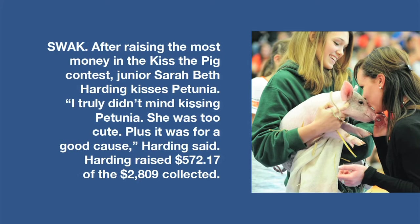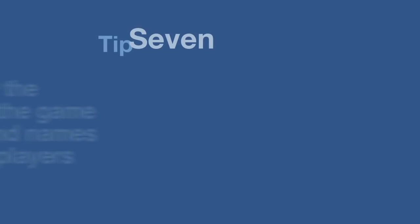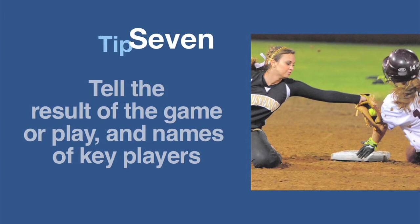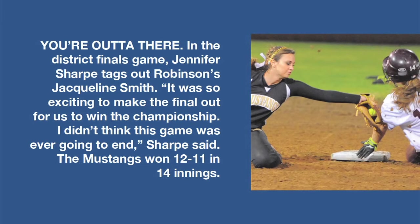Tip seven: in sports, tell the result of the game or play, as well as names of key opposing players. Nothing completes a sports caption better than giving details. The reader can't tell that this is a picture of a play that gave them the championship. 'You're out of there. In the district finals game, Jennifer Sharp tags out Robinson's Jacqueline Smith. It was so exciting to make the final out for us to win the championship. I didn't think this game was ever going to end, Sharp said. The Mustangs won 12-11 in 14 innings.'